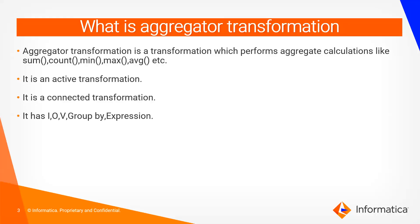It is an active transformation because the number of records passing into the transformation is not equal to the number of records outputting. For example, if you pass 10 records and you are using a sum function, it will sum all 10 records and pass only a few records. It is a connected transformation and it has input group, input port, output port, and variable port.